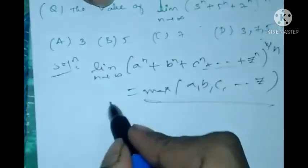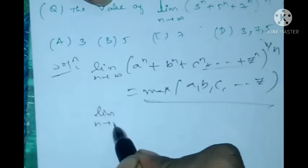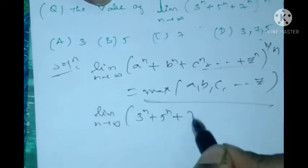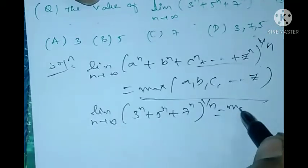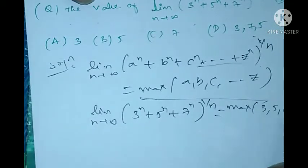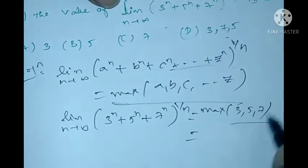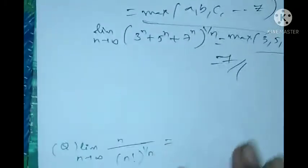Therefore, the limit as n tends to infinity of (3^n + 5^n + 7^n)^(1/n) equals the maximum of 3, 5, 7. Among these, the maximum is 7. Therefore the correct option is C, which is 7. This is one of the tricks.